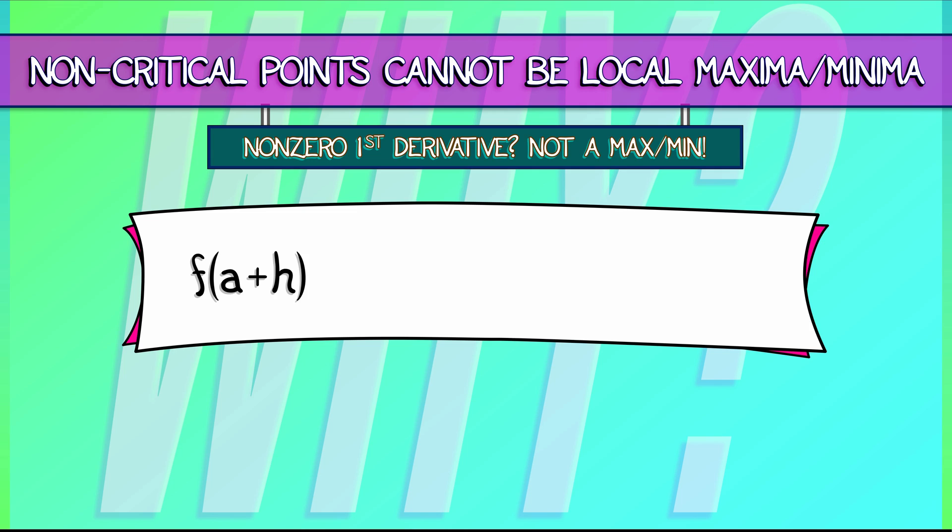This is f of A plus the derivative of f at A times H plus higher order terms, terms that live in big O of H squared as H goes to zero. For small values of H, we can ignore those higher order terms and we're left with the linearization of f at A.